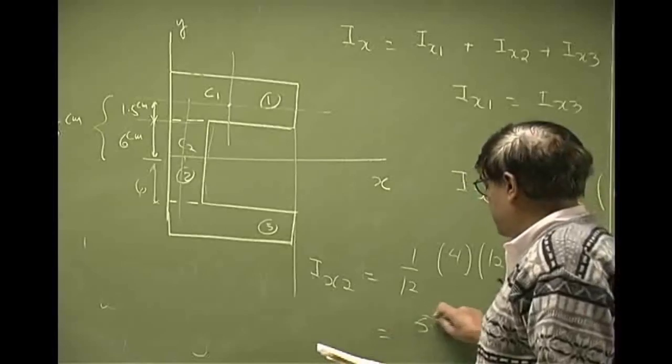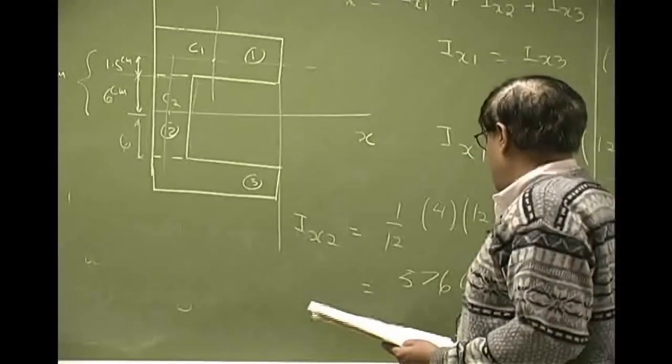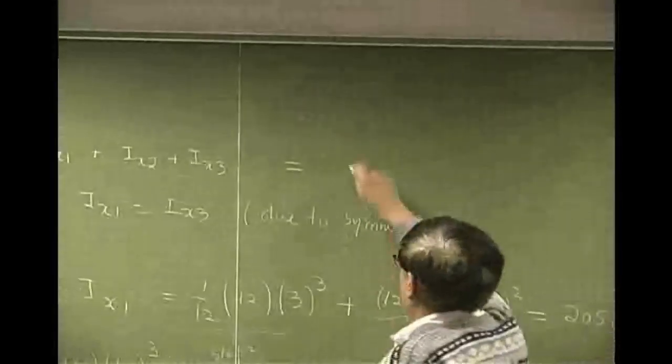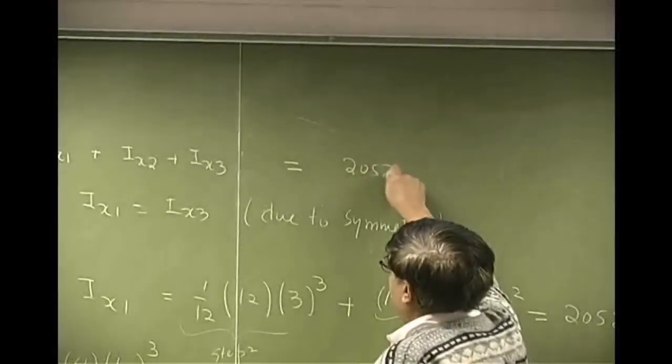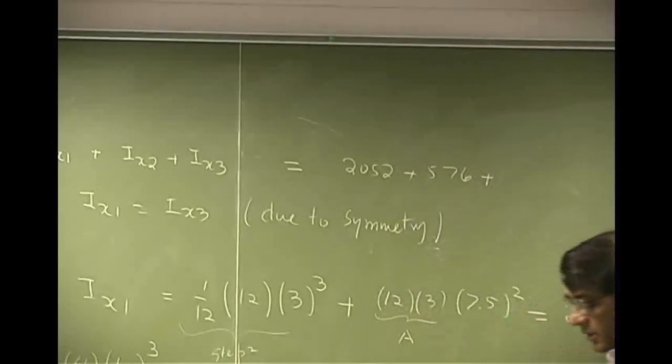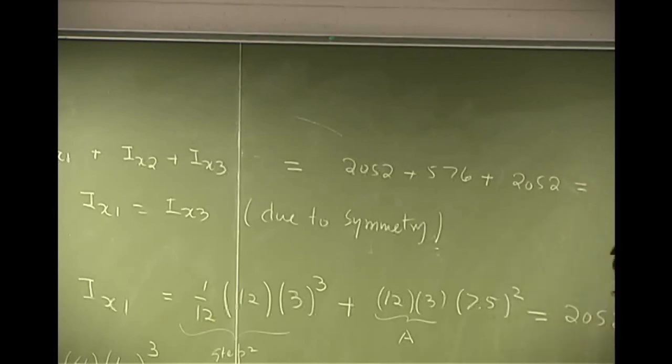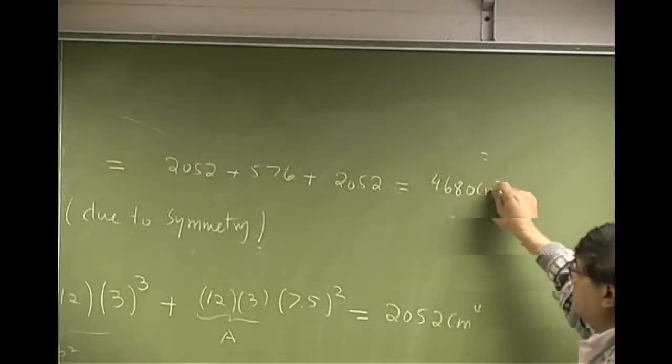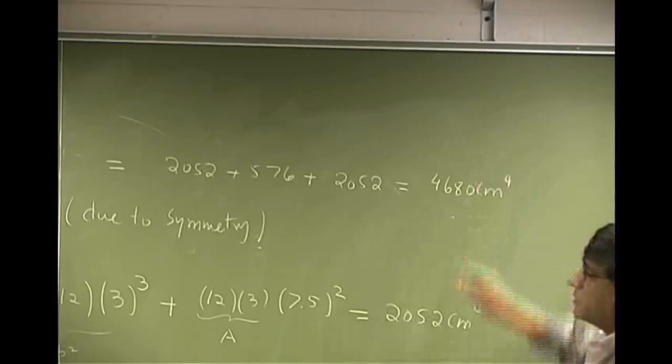And if you go through the numbers, the number is going to come out to be 576 centimeters to the power of 4. So I can go right back here. You got the first number as 2052. The second number is 576. The third number is 2052. It all adds up to 4680 centimeters to the power of 4.